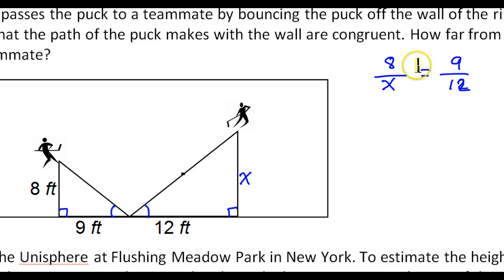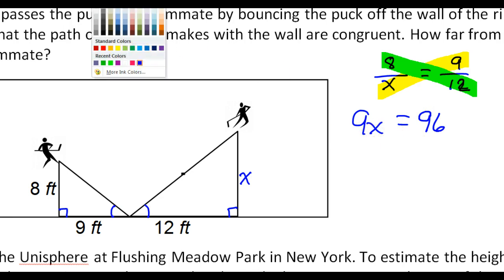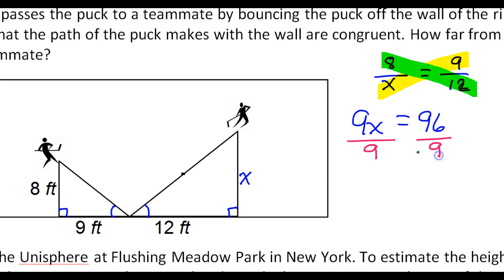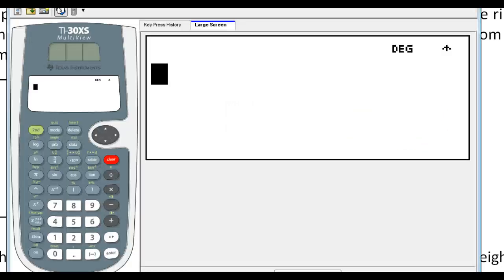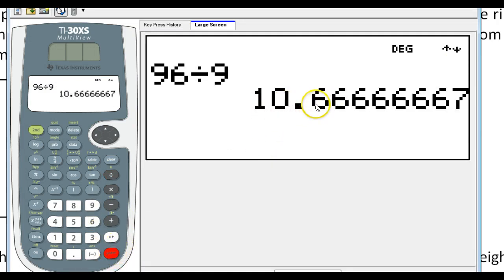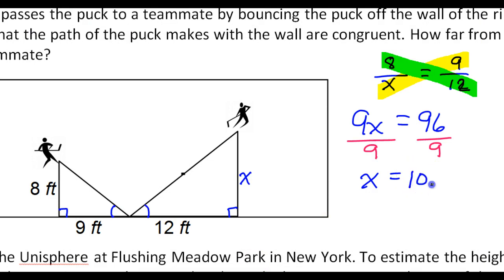So it's just a matter of solving this proportion. We will cross multiply. And so looking at the yellows there, that's going to give us 9X is equal to, and then of course 8 times 12 is going to be 96. So getting X by itself is just a matter of dividing both sides by 9. And in a real world problem, we're going to want decimals. So 96 divided by 9. And we'll round to one decimal place. So 10.7, got to round up. 10.7 feet.